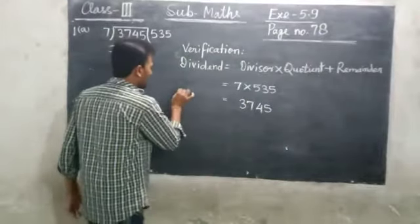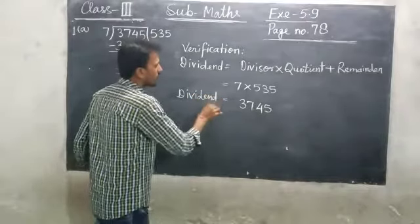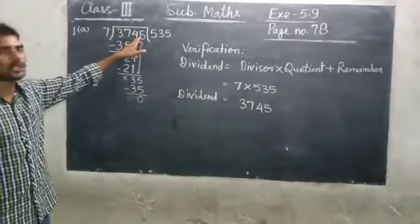See, dividend is 3745. Dividend is 3745.